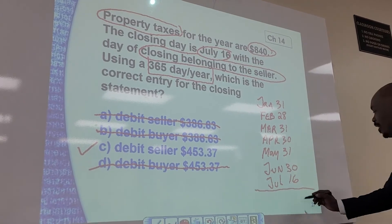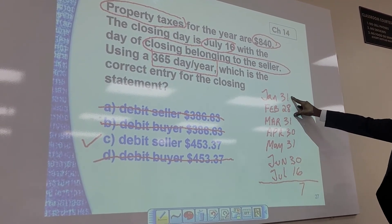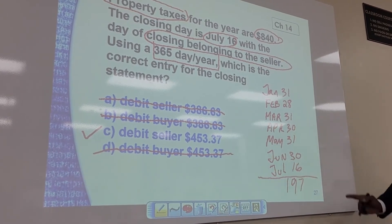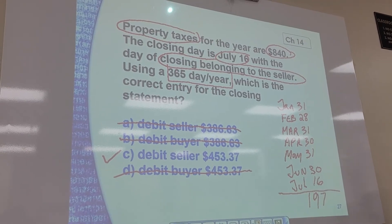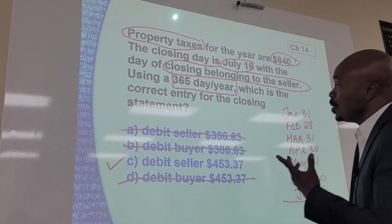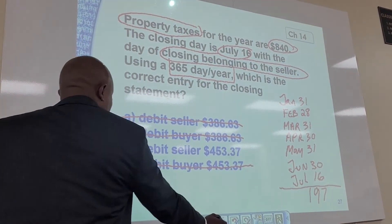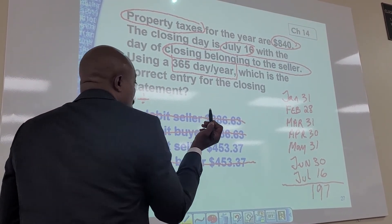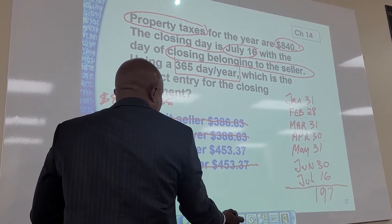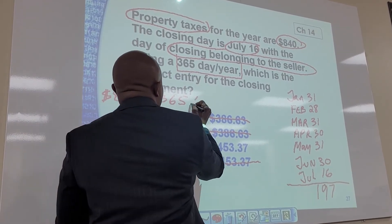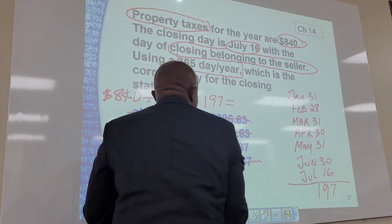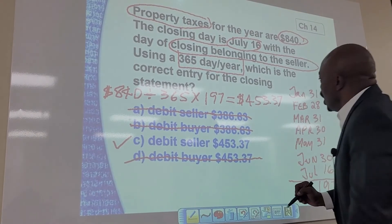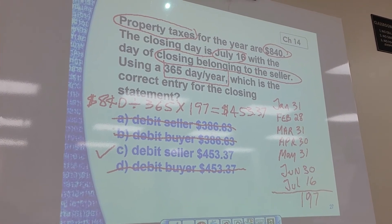So if I count this, it should be 197. That's 1, 97. So that's how many days there are. So if we have this many days, what am I going to do now? I'm going to take $840 divided by 365, and then multiply by 197. That should give me — somebody can do that in their calculator. I bet you it would be correct. That's a lot of math.